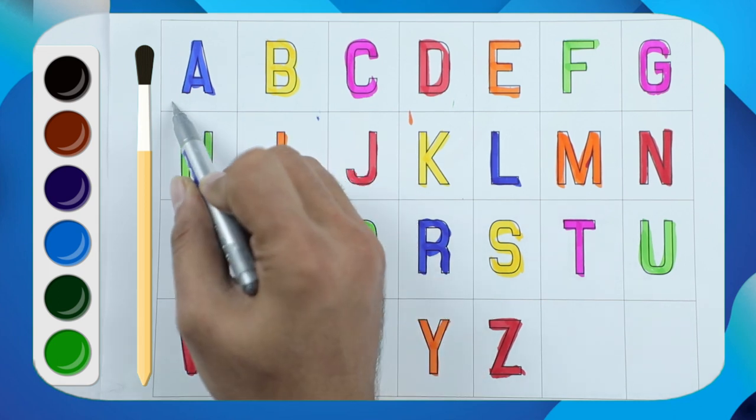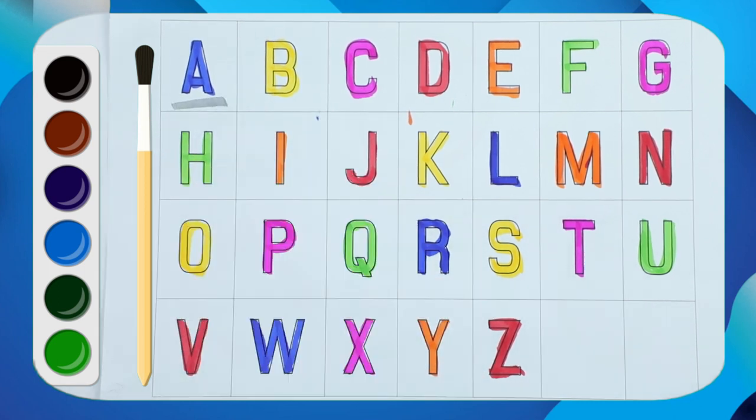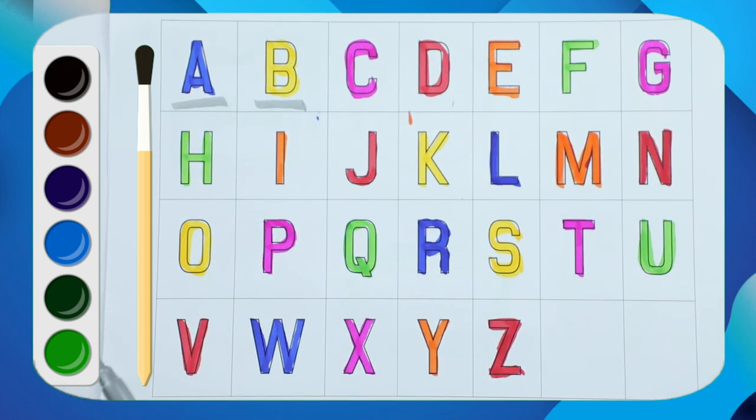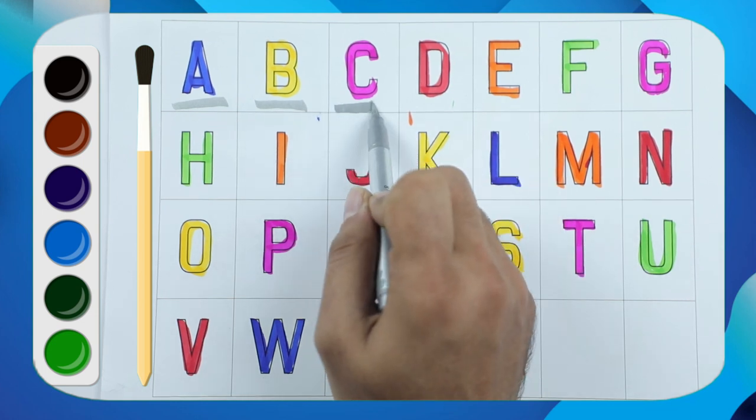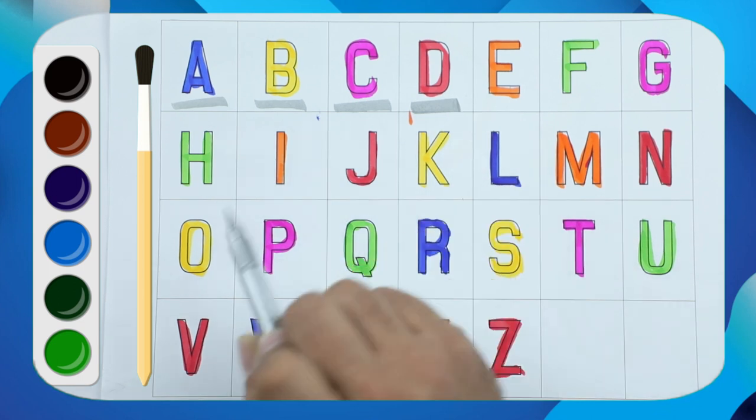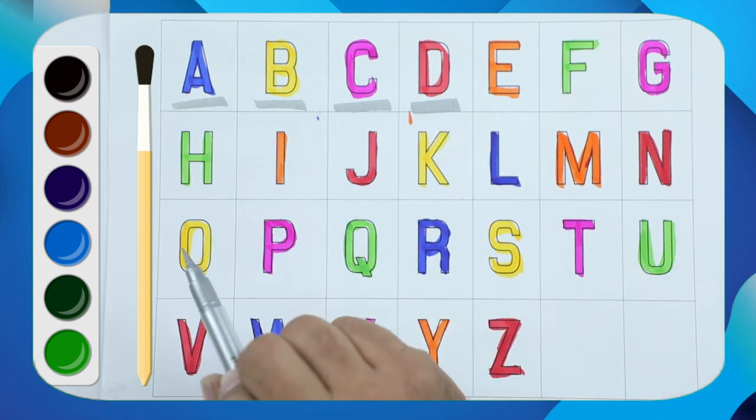It's A, capital A. B, B with yellow color. C, pink color C. Red color D, D for dog.